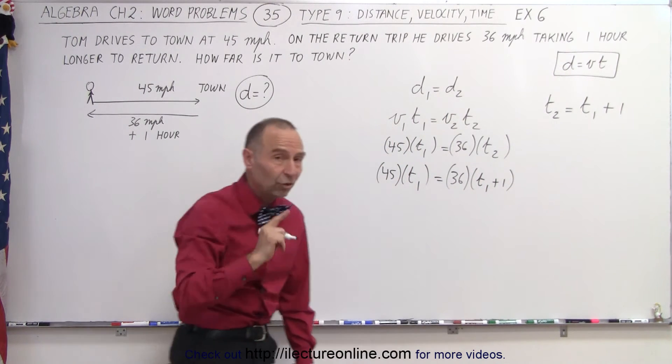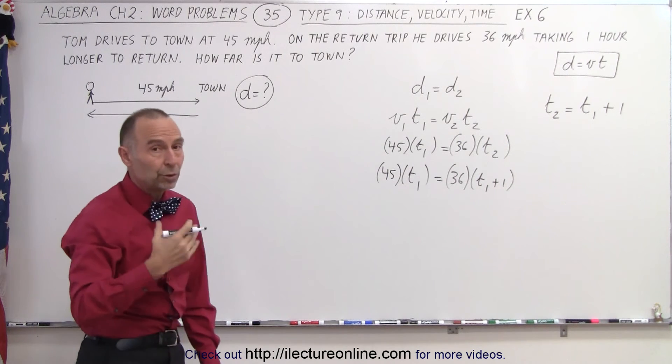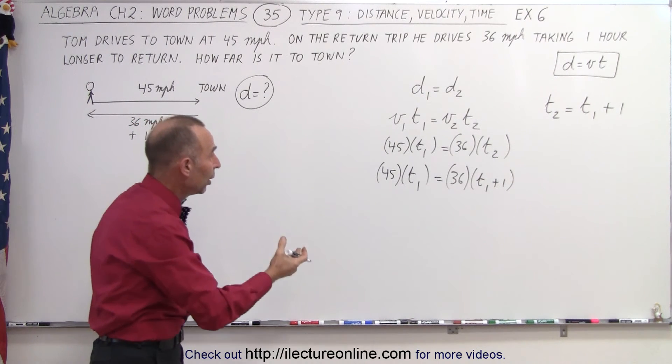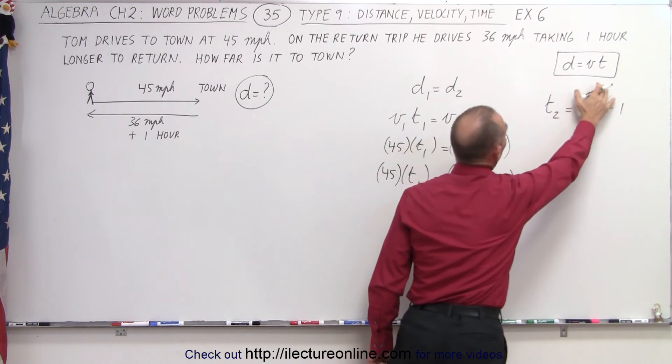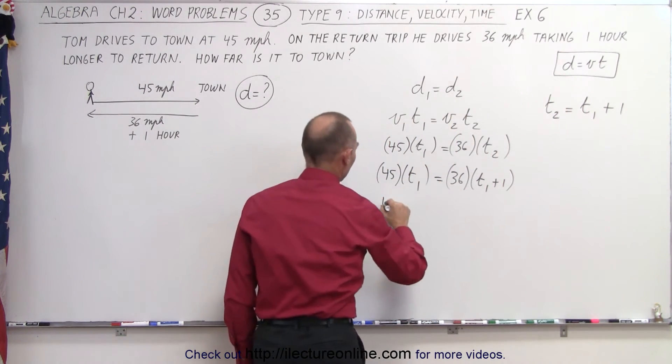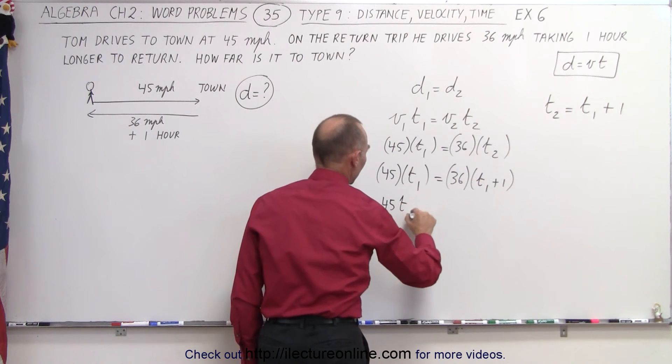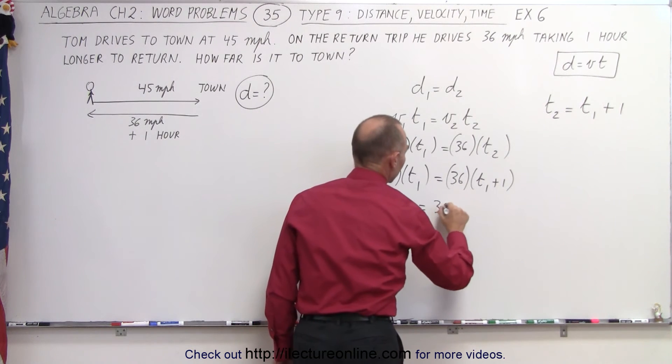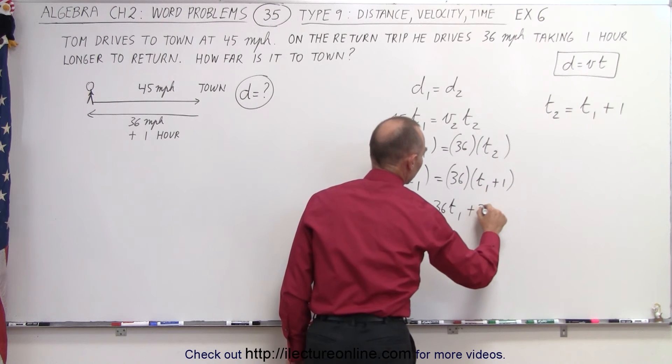And now we can solve this equation for t₁. Once we know how long it took to go to town, we know how fast Tom drove, then we can multiply that to get the distance. So let's go ahead and multiply this out. We have 45 times t₁ is equal to 36 times t₁ plus 36.